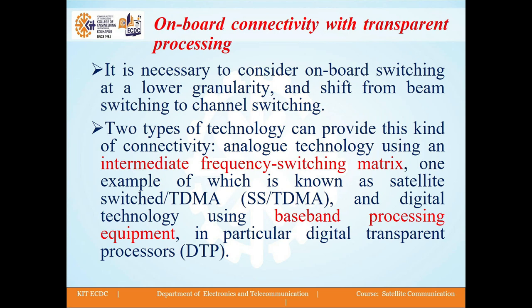The next method is onboard connectivity with transparent processing. It is necessary to consider onboard switching at lower granularity and shift from beam switching to channel switching. Two types of technology can provide this kind of connectivity: one is analog technology using an intermediate frequency switching matrix, one example of which is satellite switched TDMA (SS-TDMA), and another is digital technology using baseband processing equipment, in particular digital transparent processors (DTP).